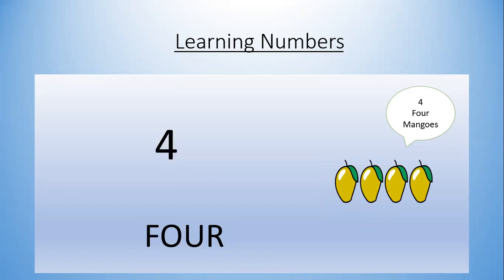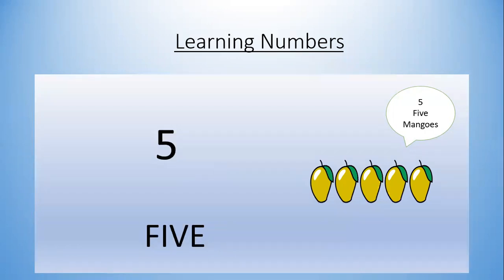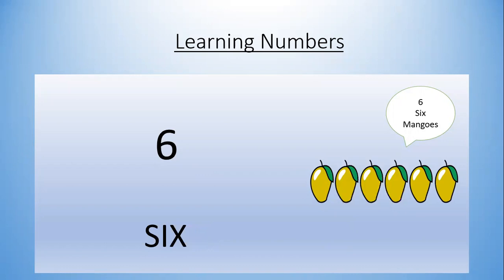Four: let's count — one, two, three, four — four mangoes. Five: how many mangoes are here? One, two, three, four, five — five mangoes. Six: one, two, three, four, five, six — six mangoes.